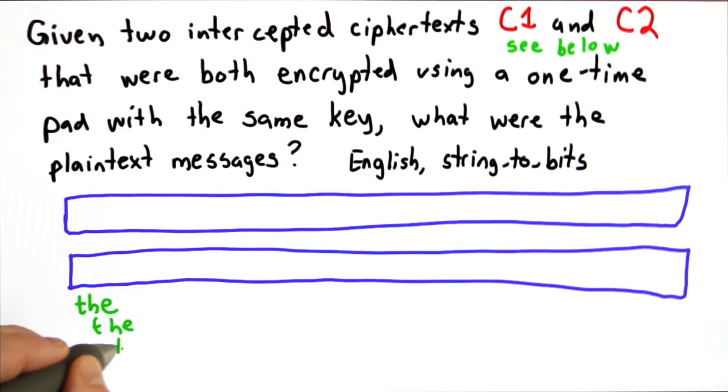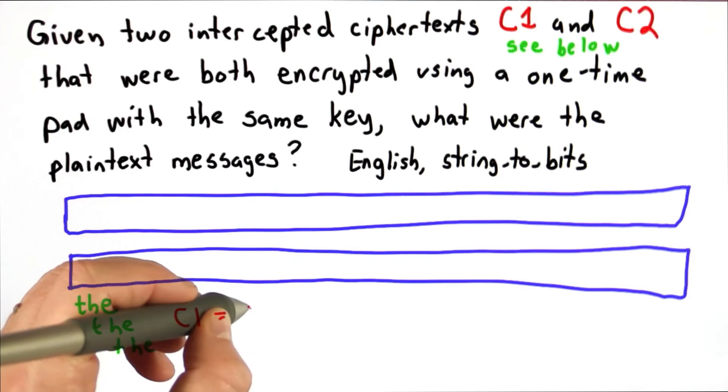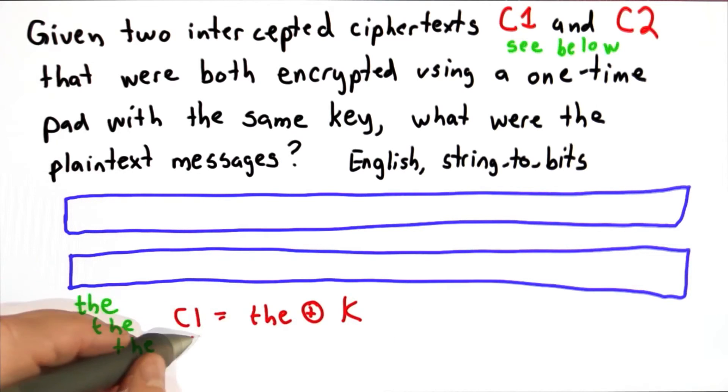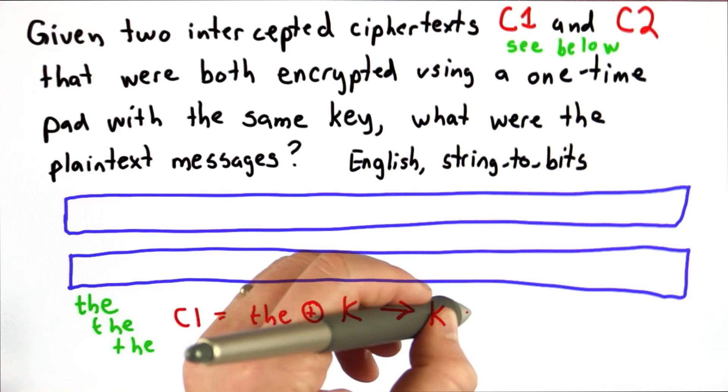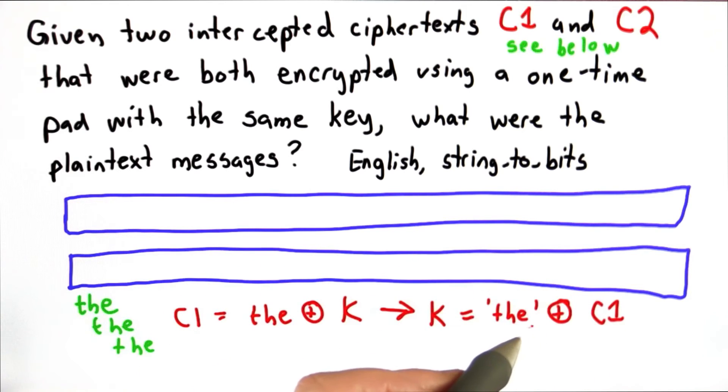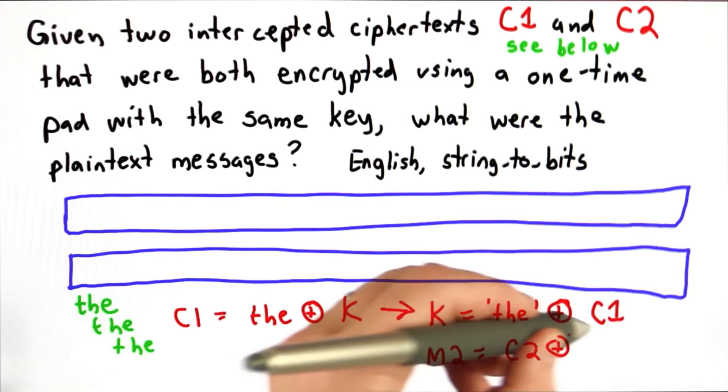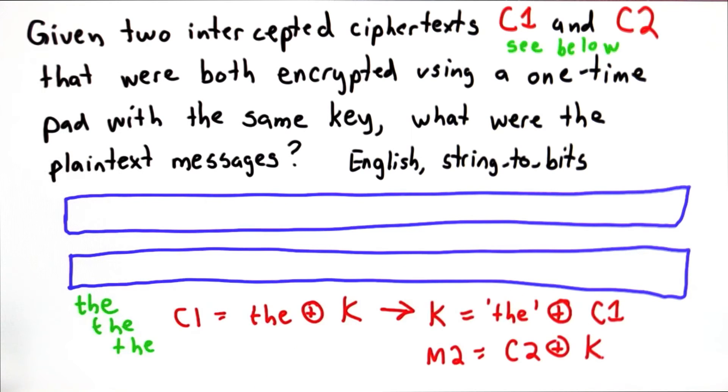Then assume that's in, say, message 1. You're going to guess ciphertext 1 is T-H-E encrypted with a key, then compute the key from this. That gives you the likely key by XORing string-to-bits of T-H-E with the corresponding part of that ciphertext. Then you can XOR out the guessed key from the corresponding part of message 2.